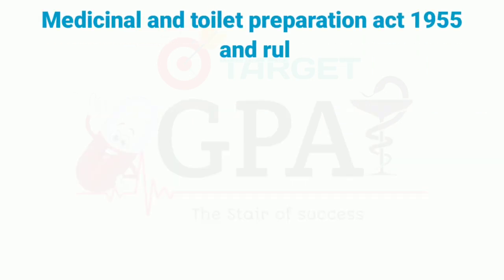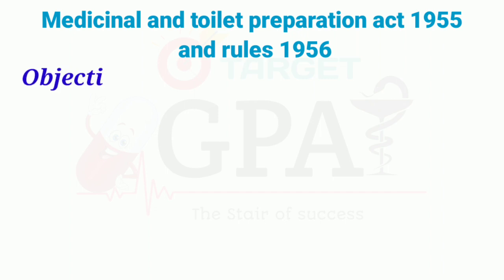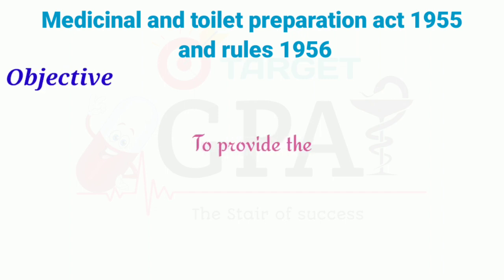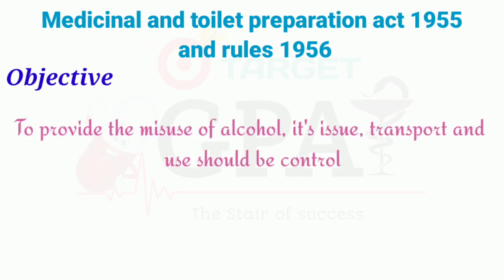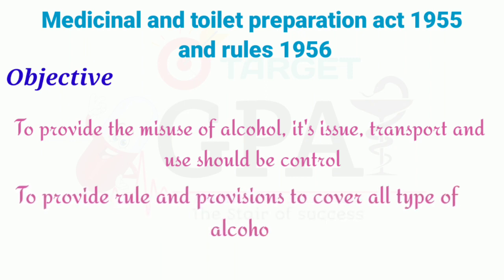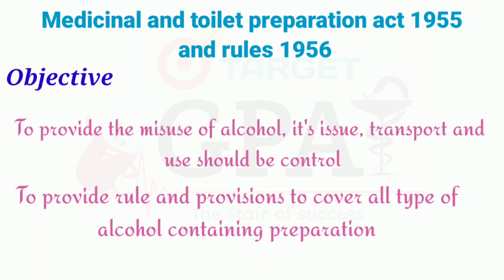The Medicinal and Toilet Preparations Act came in 1955 and its rules came in 1956. The objectives of this act are: to prevent the misuse of alcohol, and to control its issue, transport and use. Additionally, to provide rules and provisions to cover all types of alcohol-containing preparations.